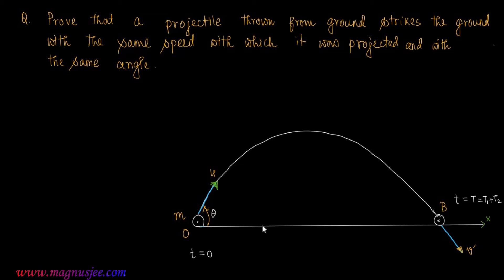The initial velocity U is resolved into two mutually perpendicular directions. Ux is the rectangular component of initial velocity in the horizontal direction and Uy is the rectangular component in the vertical direction. At point B, the final velocity V prime is resolved into two rectangular components Vx prime and Vy prime. The projectile strikes the ground at point B at an angle phi, having been thrown at angle theta from point O.